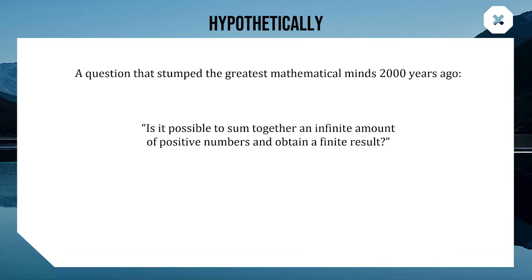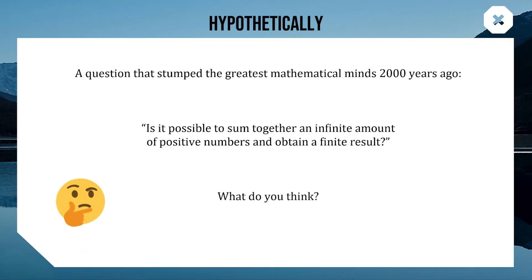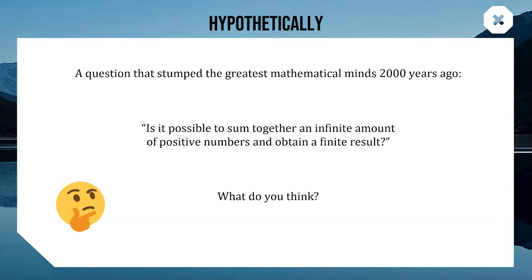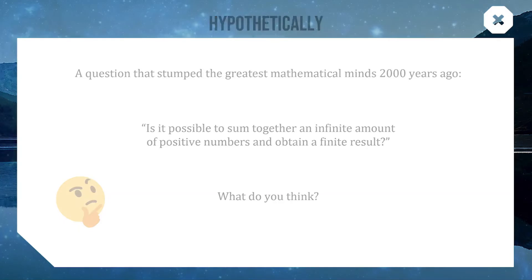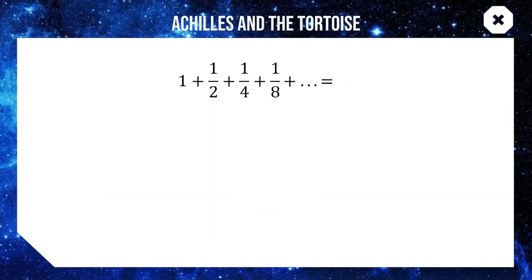When I first heard this question I thought surely if you're adding an infinite amount of something the answer should be infinity — but the answer is actually yes. It is possible to add together infinite terms and get a finite number. Consider the geometric series one plus a half plus a quarter plus an eighth and so on, where each term is half the term before it.